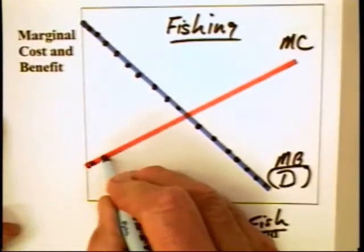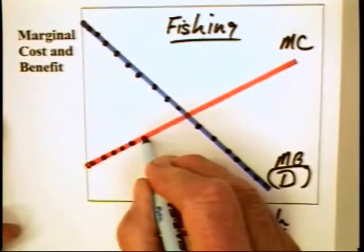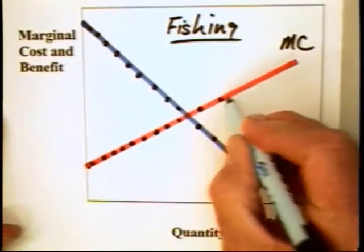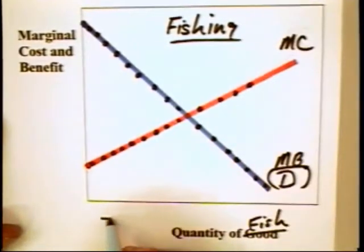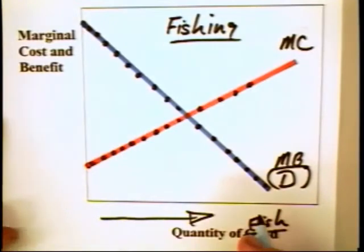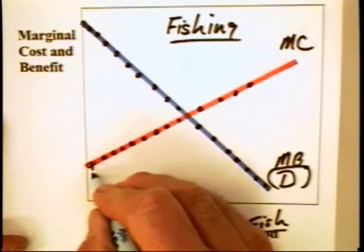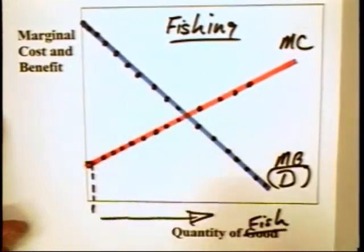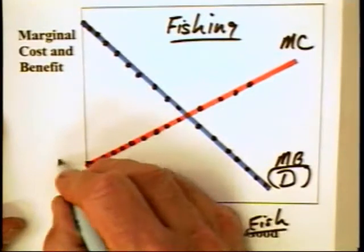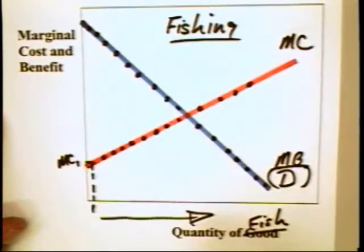We might also note that the marginal cost of producing a good indeed goes up. It can go up for two reasons. First off, as an individual engages in more and more of an activity, that individual is going to give up more and more valuable opportunities. To catch the first fish, the individual is going to give up something else that he or she could have done.